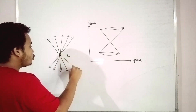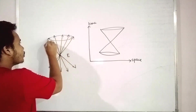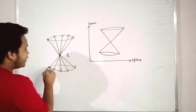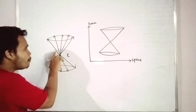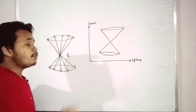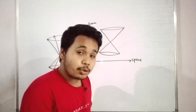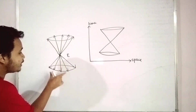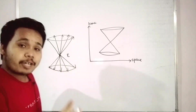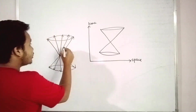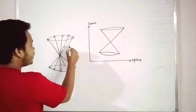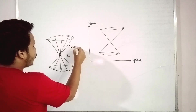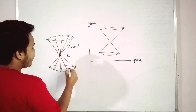We will get something like this. The upward movement of light is called the forward light cone, and the backward movement of light is called the backward light cone. So this upper part is the forward light cone and the lower part is the backward light cone.